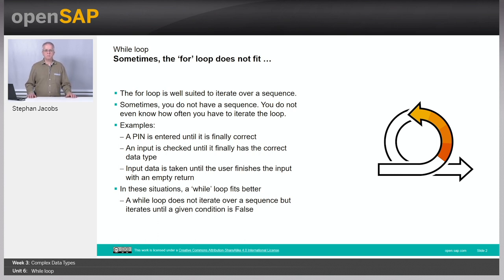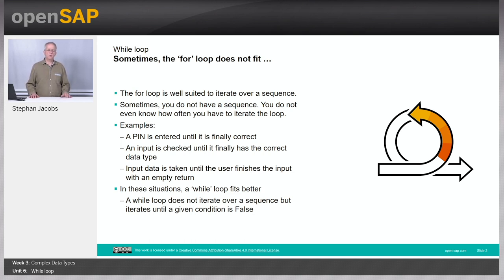Take another example. Sometimes you would like to grab an integer as input, but the input function always delivers only a string. So you have to cast it into an integer first. If the user enters some characters like ABCD, the program will run into an error. So you would like to first check if the input value is castable — if it can be converted to an integer — and the user has to re-enter as long as it consists only of digits. Again, you do not know how often the user has to re-type.